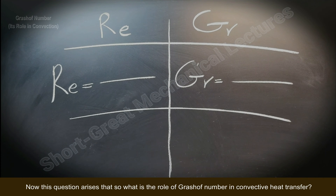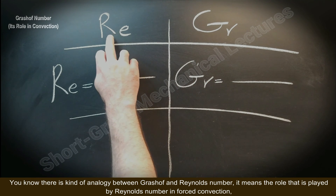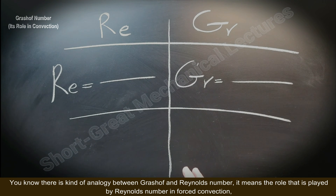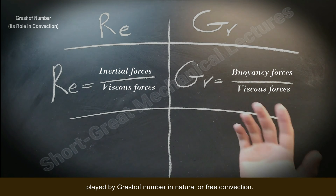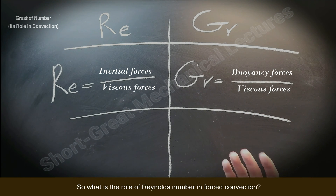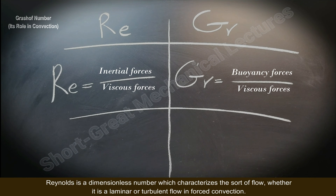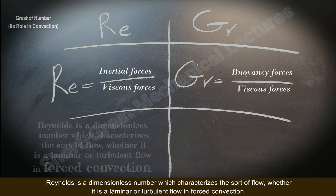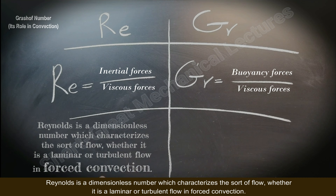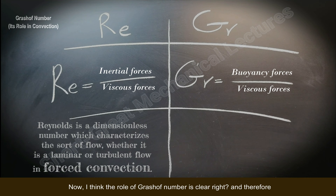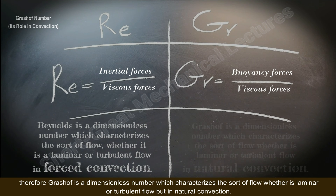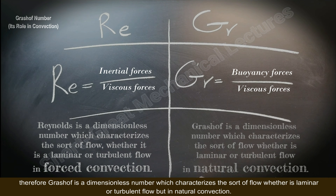A question arises: what is the role of the Grashoff number in convective heat transfer? There is an analogy between Reynolds and Grashoff numbers. The role played by the Reynolds number in forced convection is played by the Grashoff number in natural or free convection. The Reynolds number is a dimensionless number that characterizes the sort of flow — whether it is laminar or turbulent — in forced convection. Similarly, the Grashoff number characterizes whether flow is laminar or turbulent in natural convection.